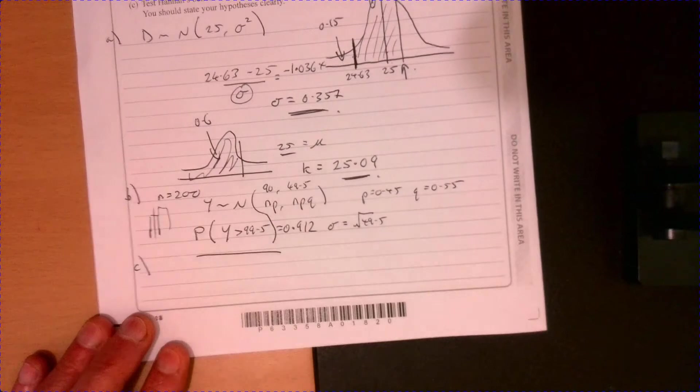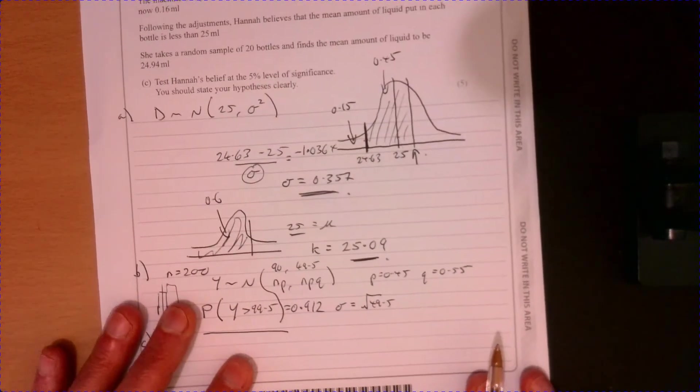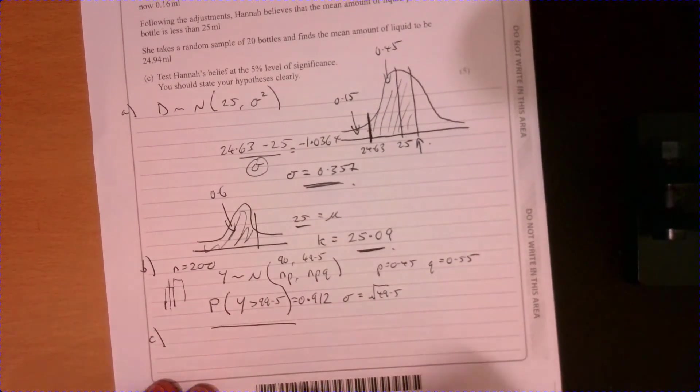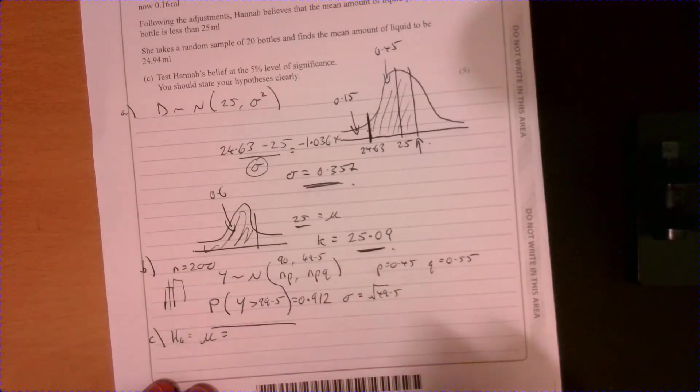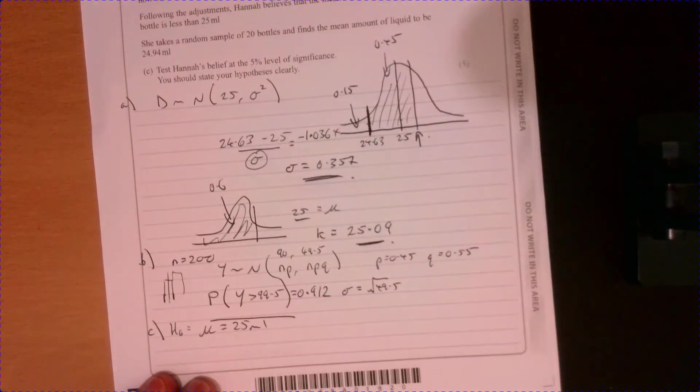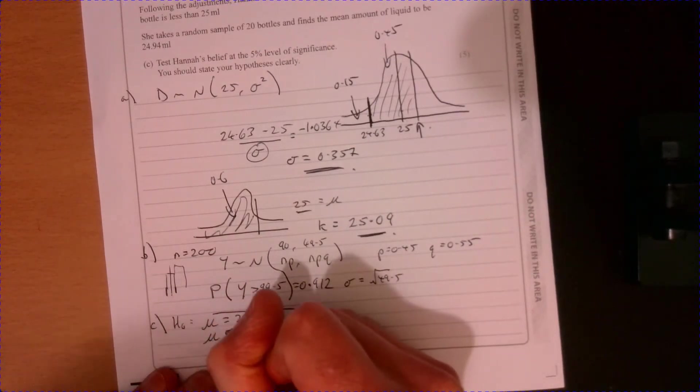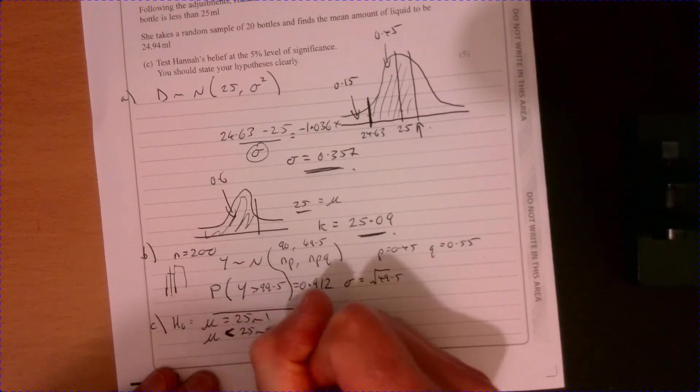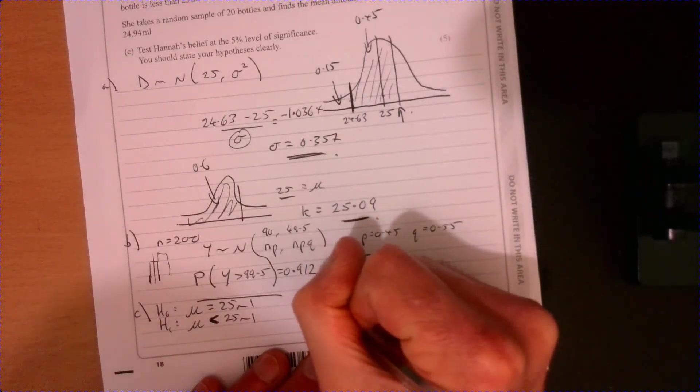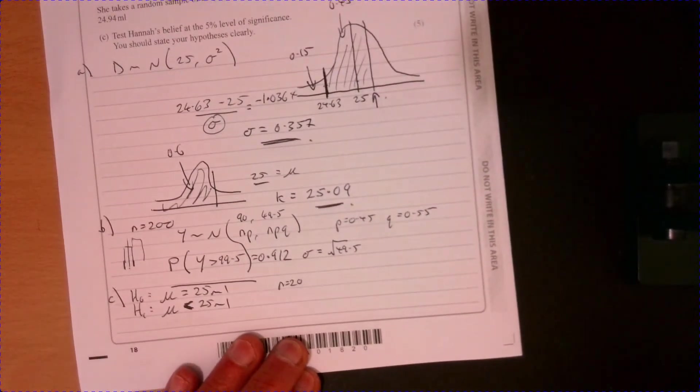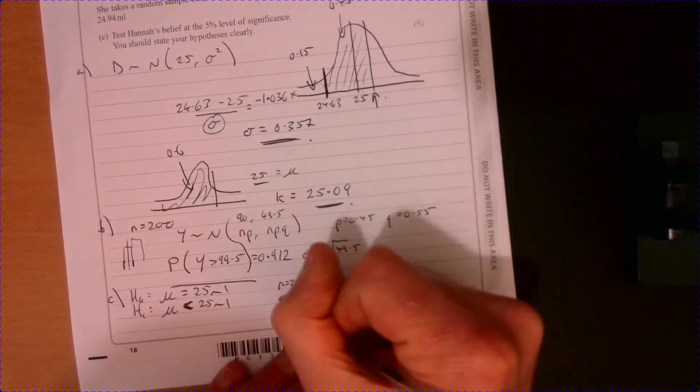Let's squeeze in part C just down the bottom here. So what are we told on part C? So we're carrying out a hypotheses test. So null hypotheses is where the mean hasn't changed, so it's still 25. And the alternative is it's less than 25. So we write that information down first of all. What else have we got? Well, we've got N is 20.